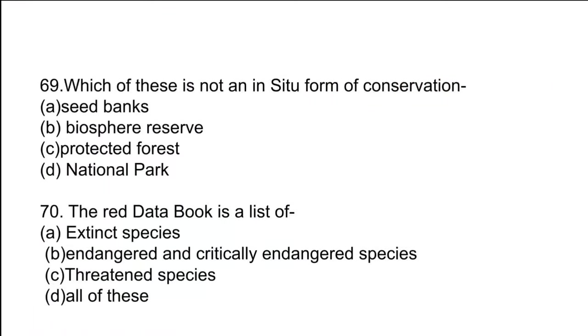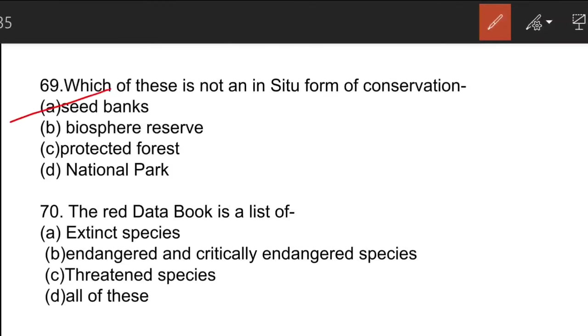The next question: which of these is not an in-situ form of conservation? In-situ and ex-situ conservation are very important topics that have been asked in previous year questions. The correct answer is seed bank. Seed banks and genetic banks are examples of ex-situ conservation. In-situ conservation — where conservation takes place in the natural habitat itself — includes biosphere reserves, national parks, protected forests, reserve forests, and community forests.